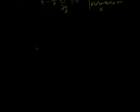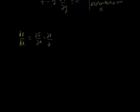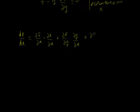If we write out the total derivative of the function f, then df/dx equals partial f by partial x times partial x by partial x, plus partial f by partial y times partial y by partial x, plus partial f by partial y' times partial y' by partial x.